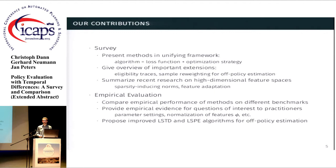what are the differences. So in the journal paper I present here, we basically make two contributions: we do a survey and an empirical evaluation. In the survey, we present all the methods in a unifying framework of function approximation. While a similar framework has been used in previous work, we extend it so that we can use it for all kinds of methods that we are considering. And we also give an overview of important existing extensions, such as eligibility traces or importance sampling for off-policy estimation. And we also summarize recent research on how to handle very high-dimensional feature spaces.